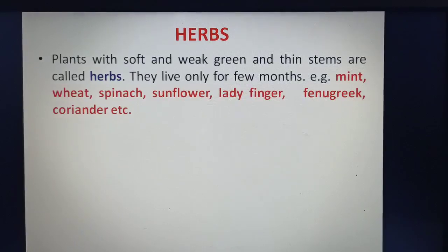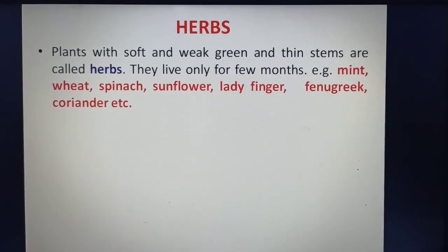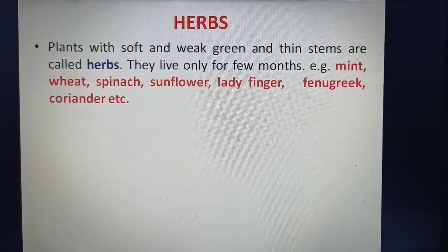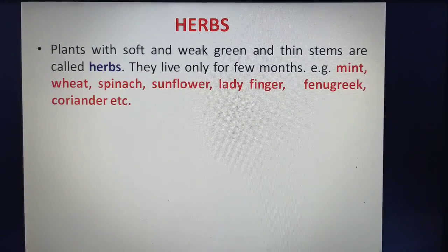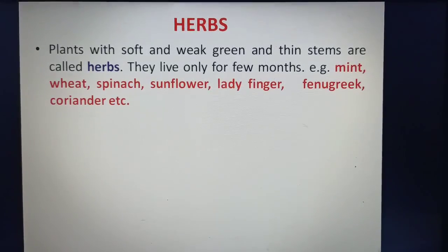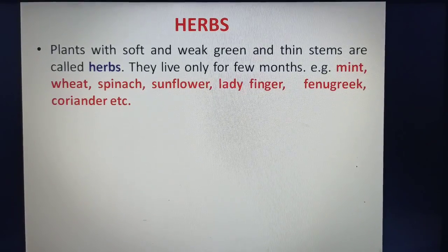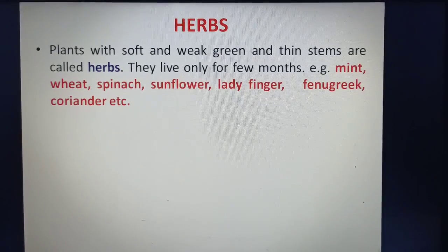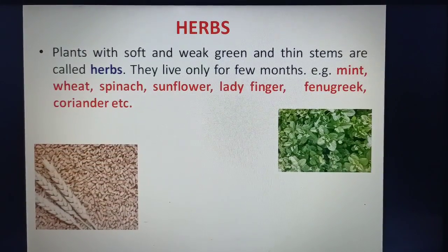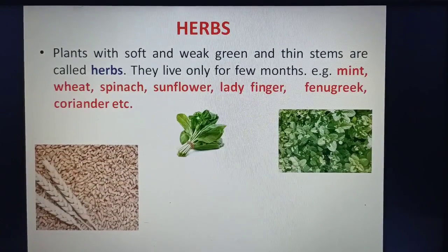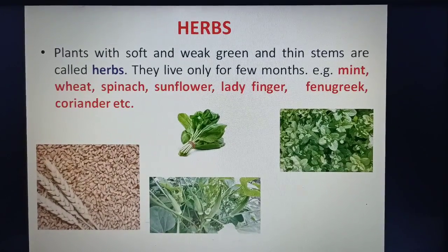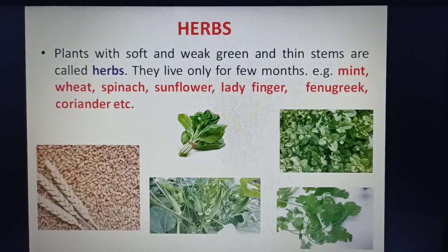Herbs: Plants with soft and weak, green and thin stems are called herbs. They live only for a few months. Some examples of herbs are Mint, Wheat, Spinach, Sunflower, Ladyfinger, Fenugreek and Coriander.